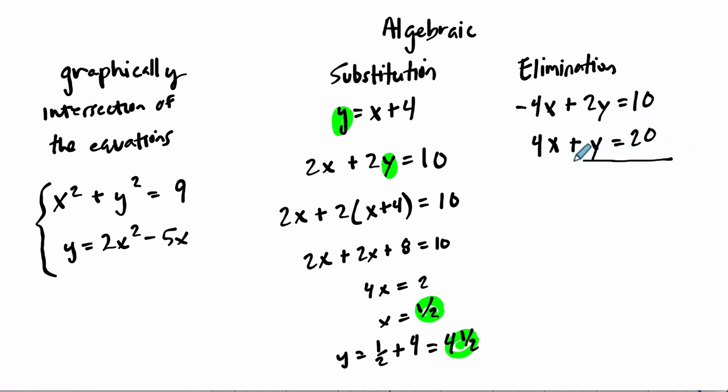And then our second equation will be 4x plus y equals 20. So the amazing thing here is that we can actually add these equations. And then we get a result, which is consistent with this system. So if we add negative 4x plus 4x, that's 0. 2y plus y is 3y. And 10 plus 20 is 30, which means divide both sides by 3, y is 10.